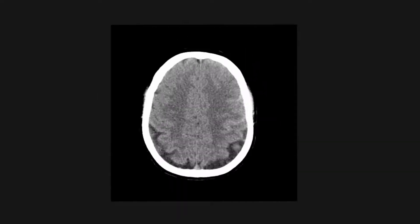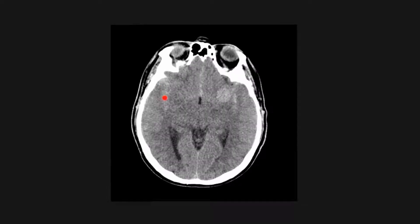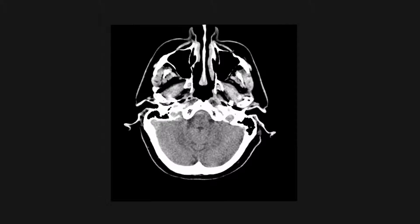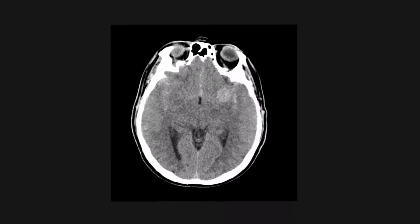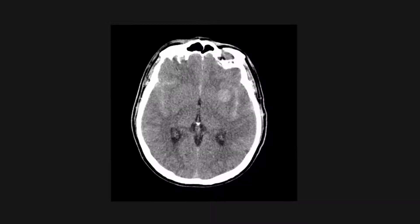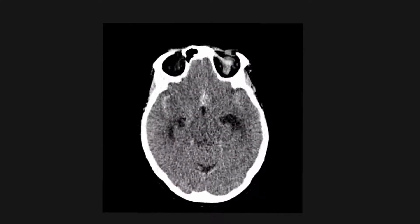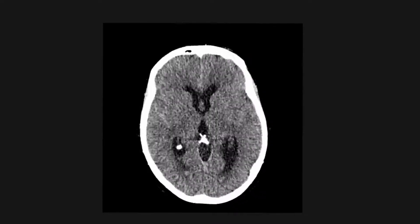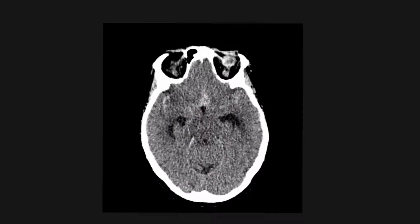In this case, again, there is an acute subarachnoid haemorrhage with hyperdensities seen within the gyri and in the sylvian fissures. On this CT, it's obvious that the aneurysm is coming from the left middle cerebral artery. In this next case with an acute subarachnoid haemorrhage, there is pooling of blood in this area, which suggests an anterior communicating artery aneurysm.